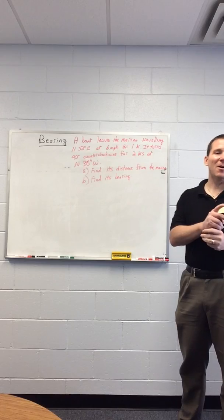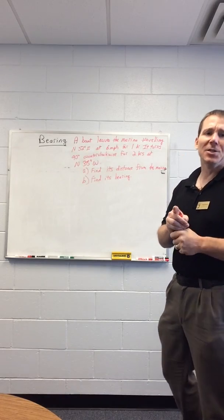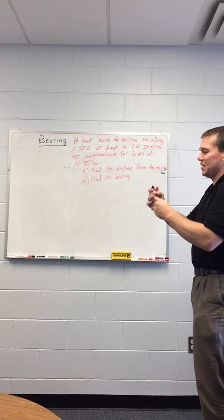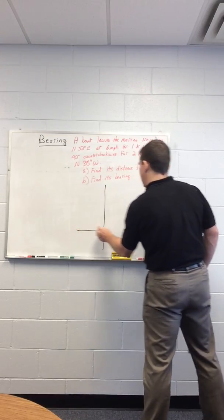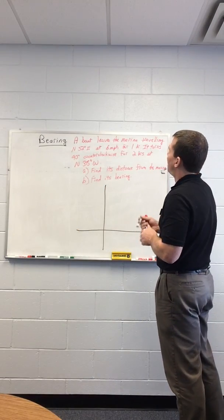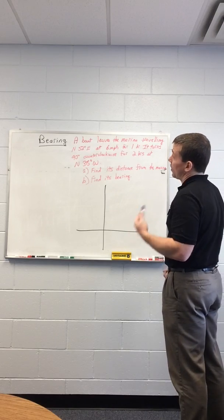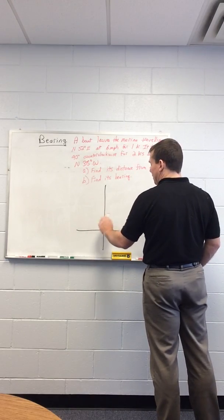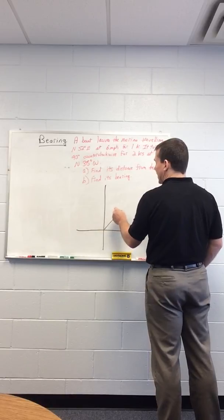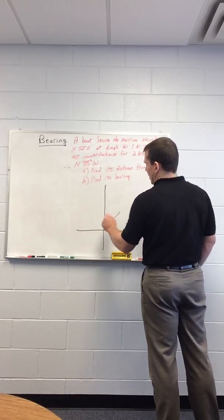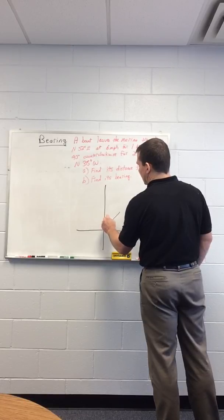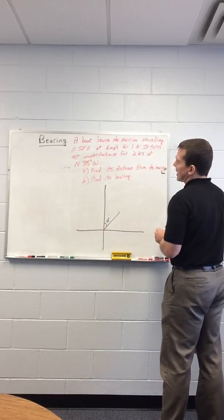This is kind of a long involved type problem, so let's set it up and draw a picture to get an idea of what's going on. A boat leaves a marina traveling north 52 degrees east, which means I'm going up and to the right, maybe like this, at six miles per hour. This is a 52 degree angle since that's my bearing from the vertical.